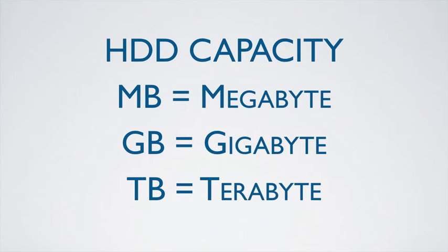One more thing about hard disk drive capacity — HDD capacity. The most common units you'll see today: megabytes is the lowest on the totem pole, though you'll see very few hard drives that talk about megabytes anymore. Then it goes up to gigabytes, which is a thousand megabytes, and terabytes, which is a thousand gigabytes. There are six more classifications up the scale, but most of us looking at consumer hard drives will be dealing with these terms.